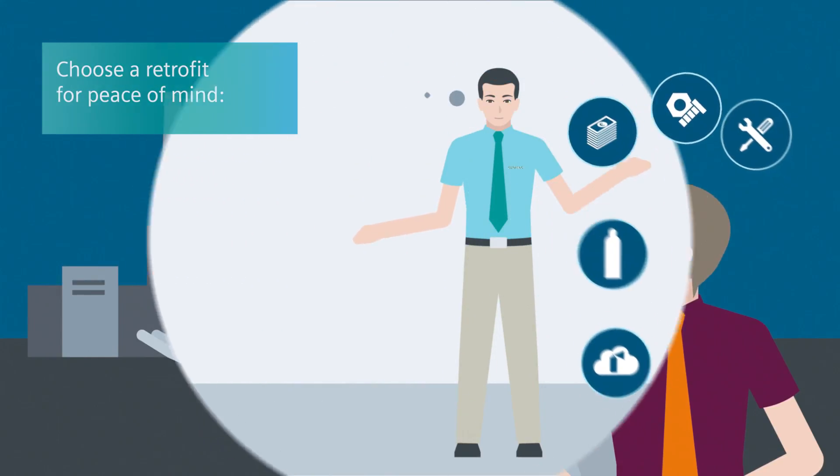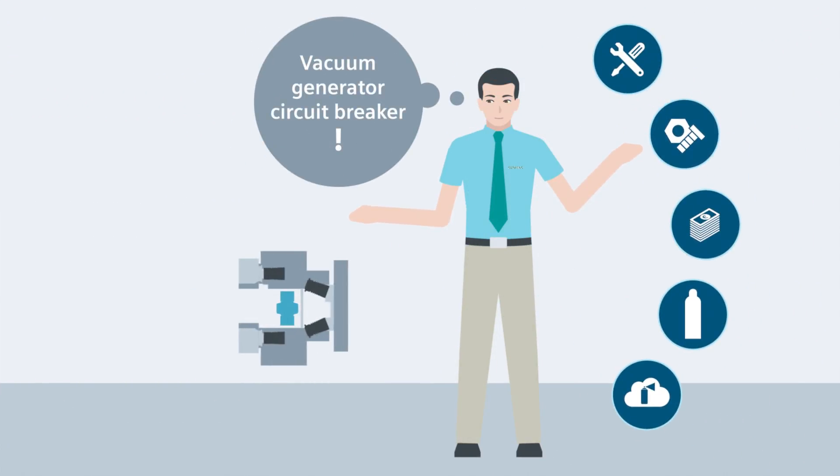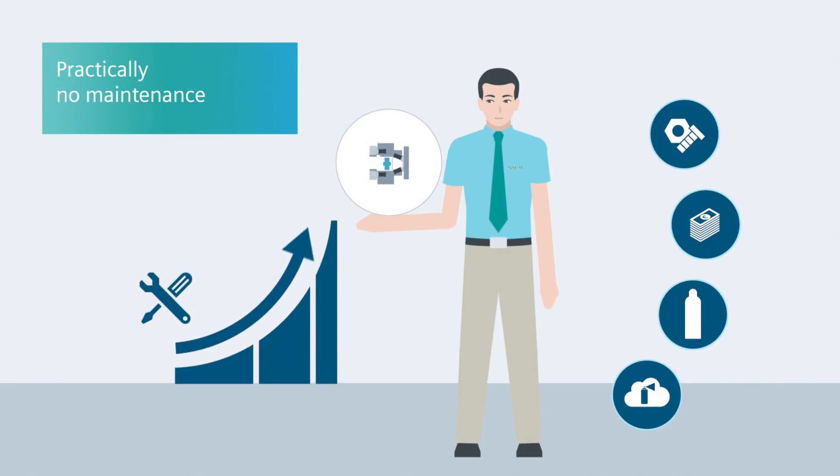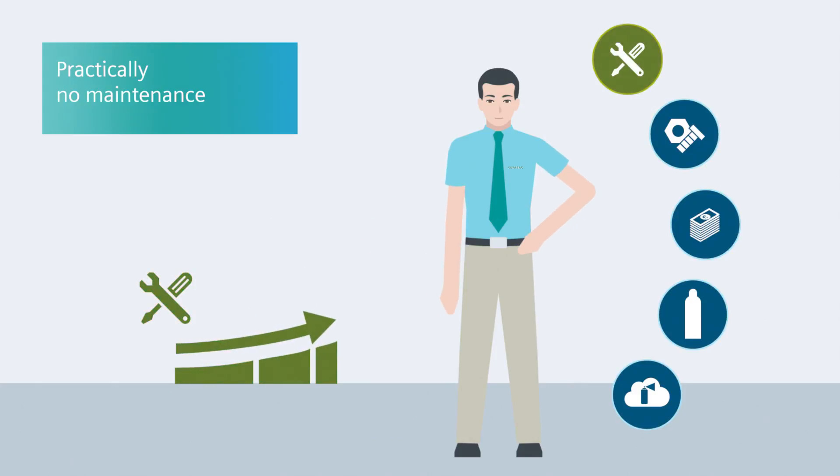With a retrofit solution using Siemens vacuum generator circuit breakers, however, you choose peace of mind. Maintenance-free vacuum switching technology helps to minimize op-ex and extends the intervals between service downtimes.